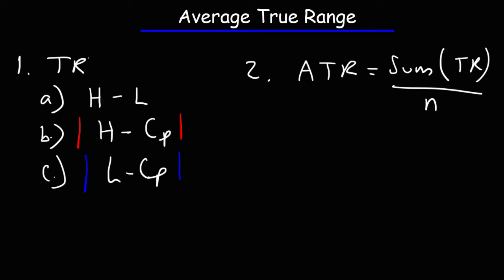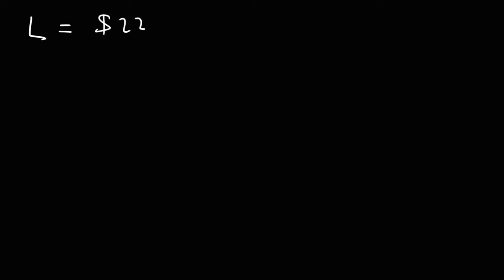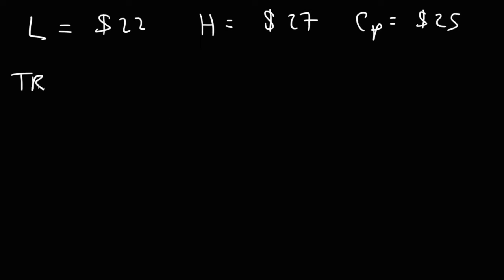So let's talk about how to calculate this with an example. Let's say that the low price for today is $22, and the high price of a stock is $27, and the stock price closed at $25 on the previous day. To calculate the true range, we use those three formulas. The current high minus the current low is 27 minus 22, which is $5.